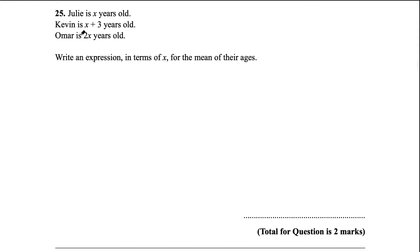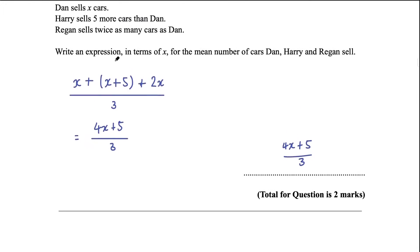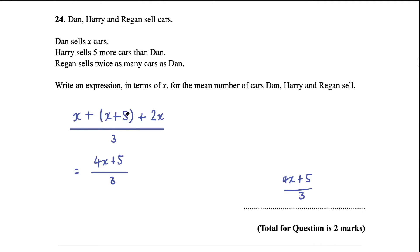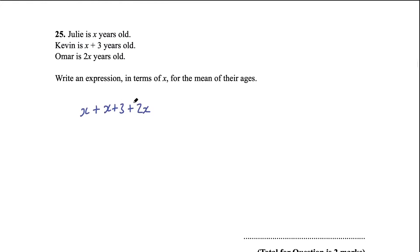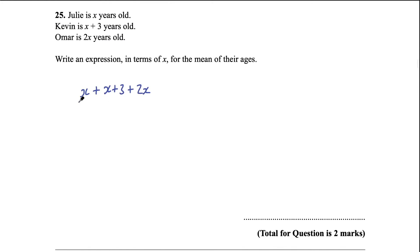Question 25: Julie is x years old, Kevin is x + 3, and Omar is 2x. Very similar to the last question — add them together: x + (x + 3) + 2x, then divide by 3. Simplifying gives (4x + 3) / 3. Either the unsimplified or simplified form is fine as a final answer.